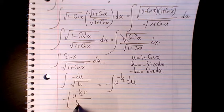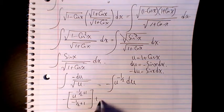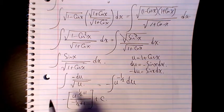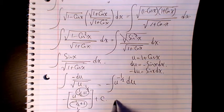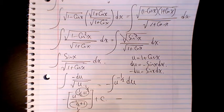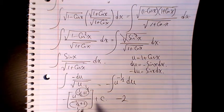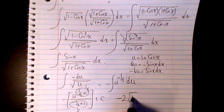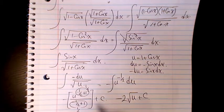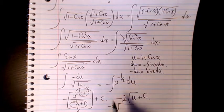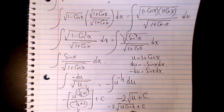Dividing by negative one over two plus one gives us negative one over two plus one equals one over two in the denominator, which flips to two. So u to the power one over two is just square root of u, giving us negative two square root of one plus cosine x plus C as the final answer.